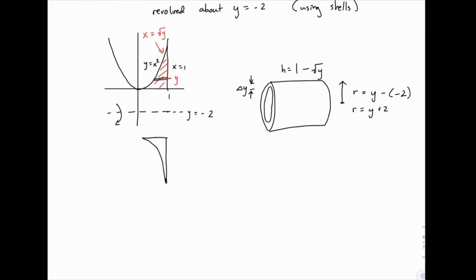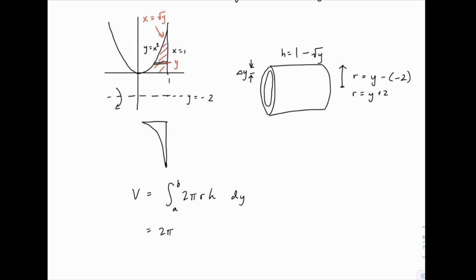But once you're ready to move forward, the volume for shells is just the integral of 2 pi r h. And of course, with the appropriate limits of integration. In this case, we're doing things with a delta y, so we'll have dy in the integral. We can pull out 2 pi, and then the radius is y plus 2, and h is 1 minus the square root of y.